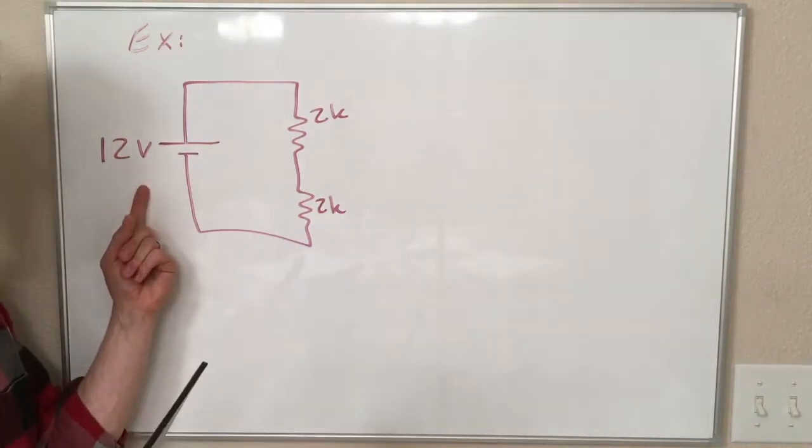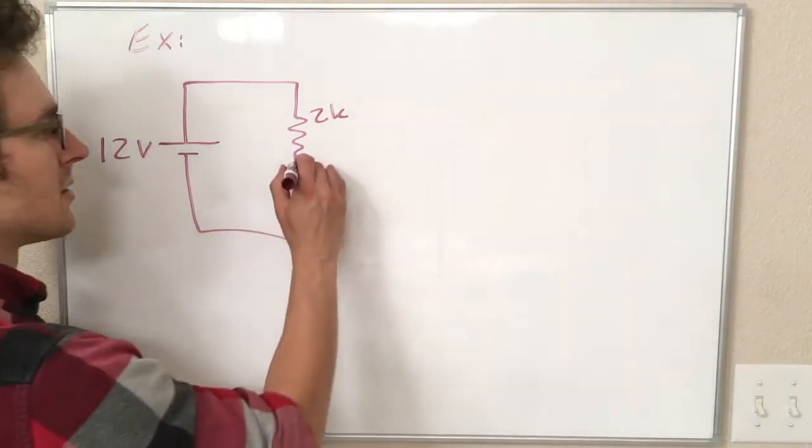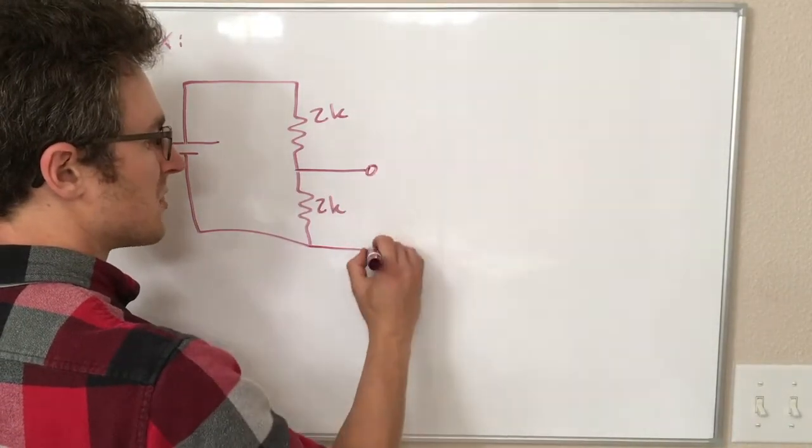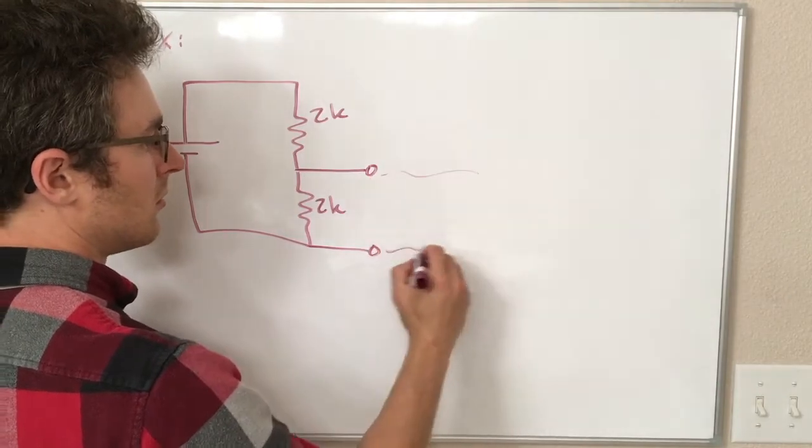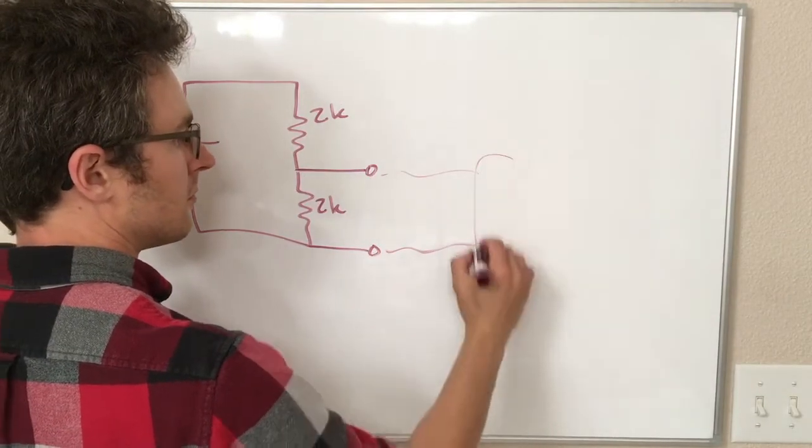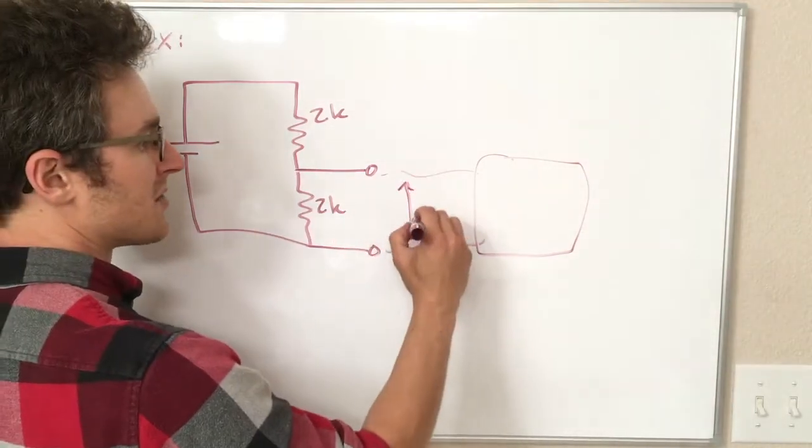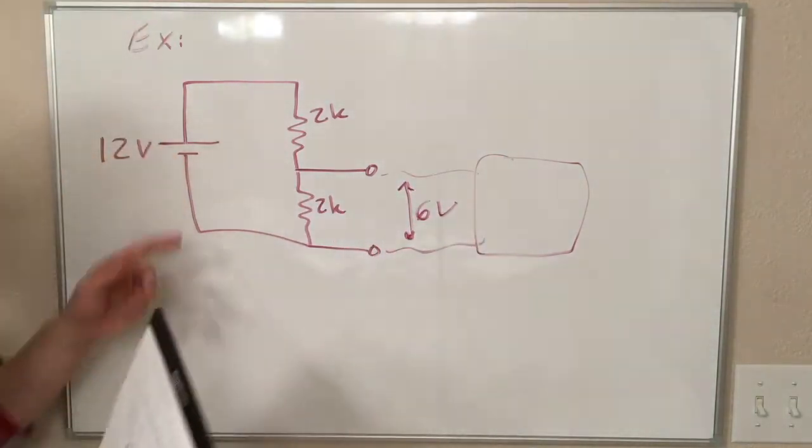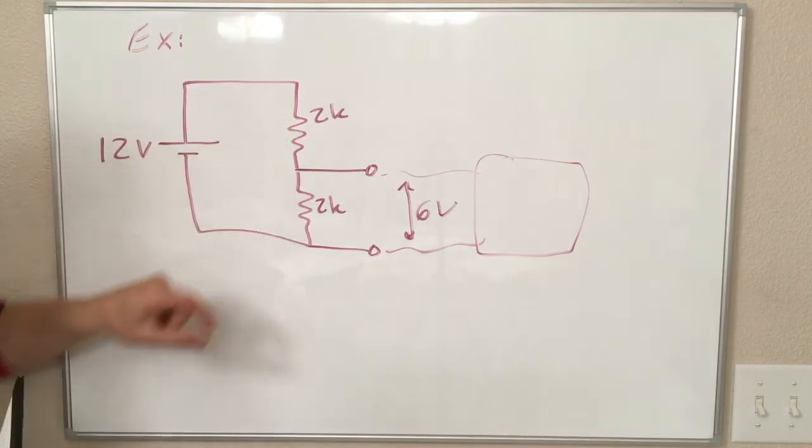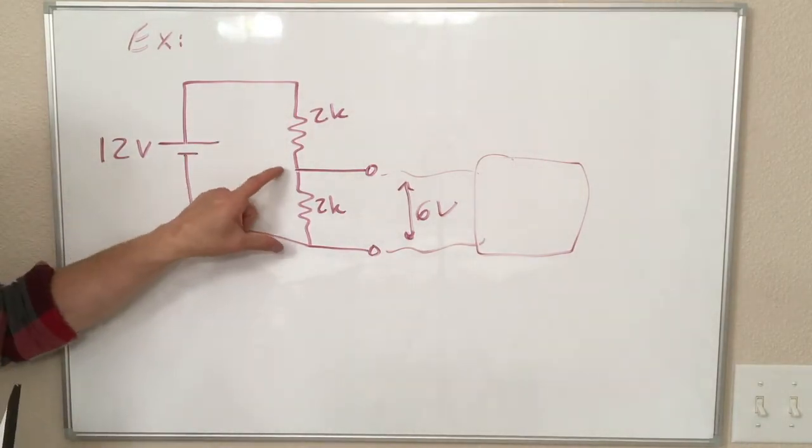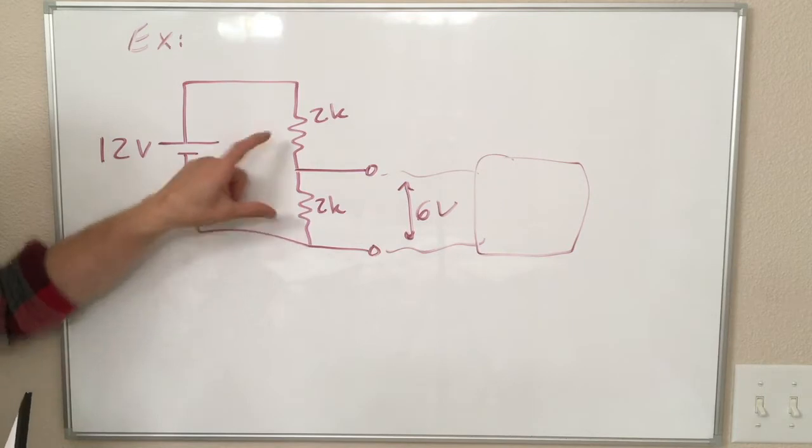And let's say we're using this voltage divider as a voltage source for something else in our project. So we have a 12 volt battery, but we really want 6 volts. So we connect this to some other circuit as a 6 volt source. And I'm saying it's a 6 volt source because we can see these two equal resistances in series are going to give us, at this point, half of the 12 volts because we have 6 volts across this and 6 volts across this.